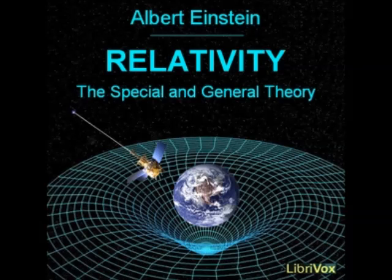But since there are other things which are not influenced in a similar manner to the little rods, or perhaps not at all, by the temperature of the table, it is possible, quite naturally, to maintain the point of view that the marble slab is a Euclidean continuum. But if rods of every kind, i.e. of every material, were to behave in the same way as regards the influence of temperature when they are on the variably heated marble slab, and if we had no other means of detecting the effect of temperature than the geometrical behavior of our rods in experiments analogous to the one described above, then our best plan would be to assign the distance one to two points on the slab, provided that the ends of one of our rods could be made to coincide with these two points. The method of Cartesian coordinates must then be discarded and replaced by another which does not assume the validity of Euclidean geometry for rigid bodies.